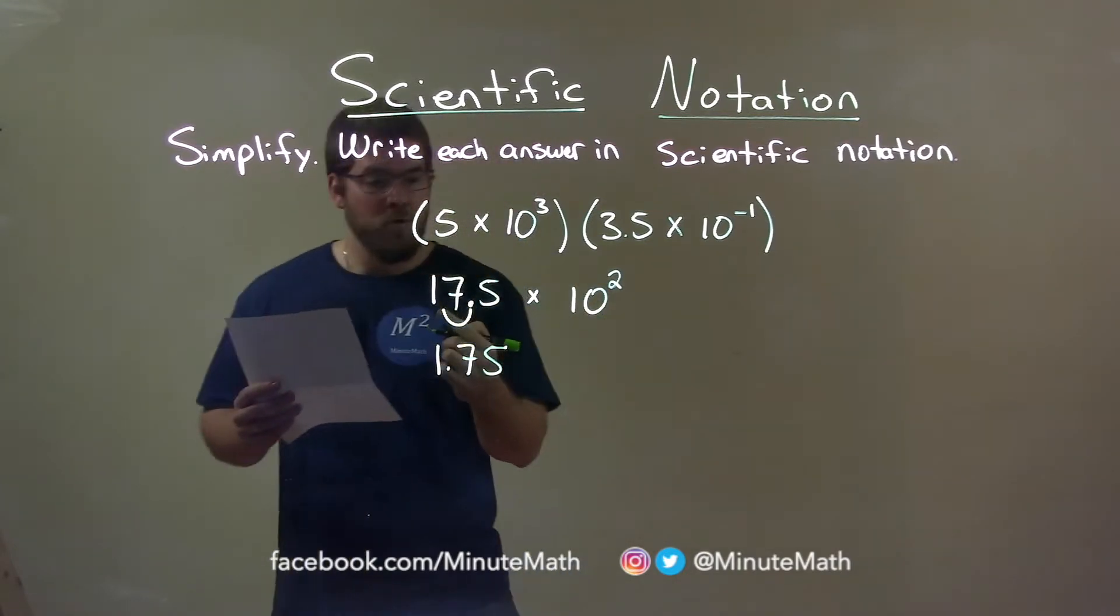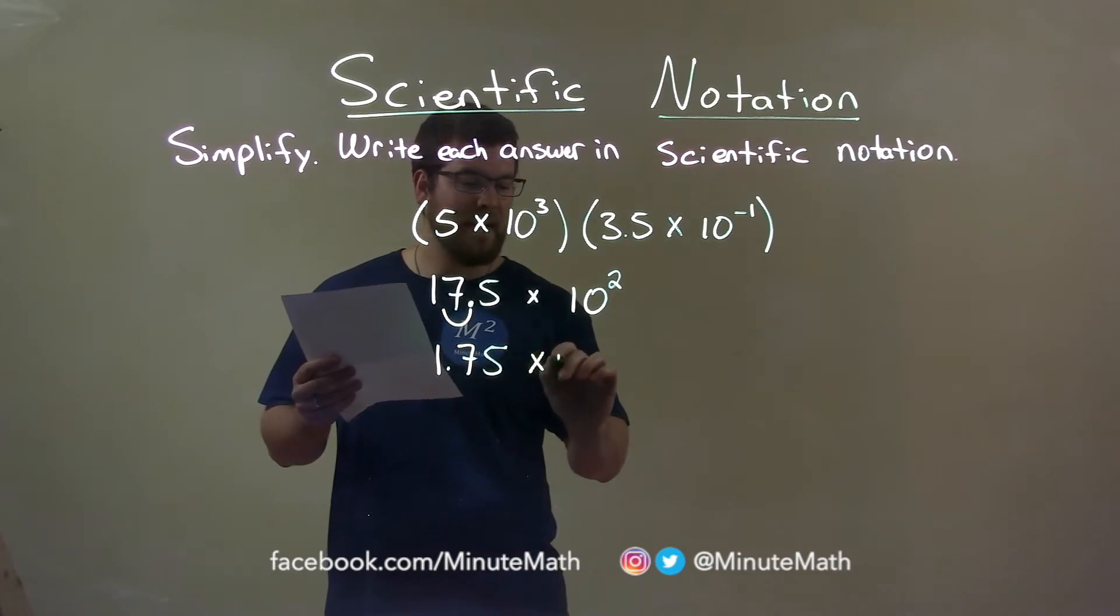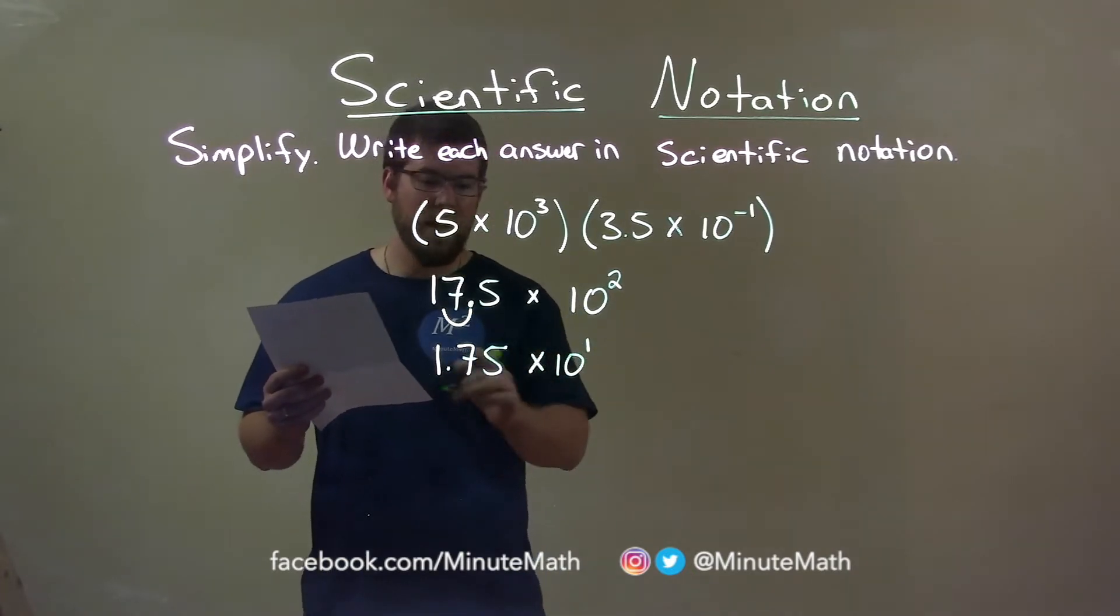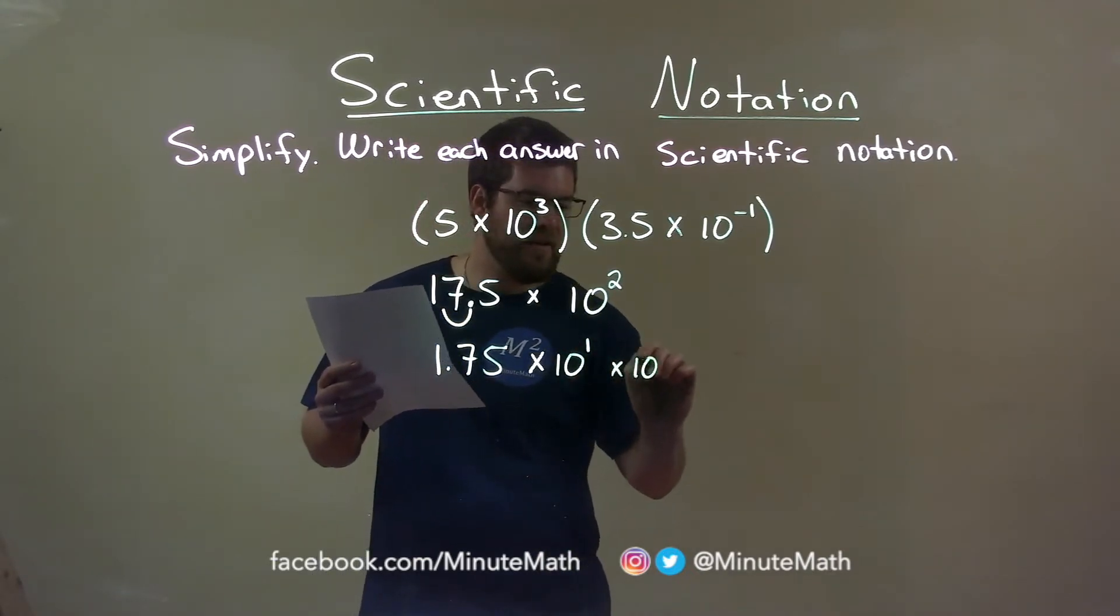To counteract that decimal movement of one spot to the left, we need to multiply this by 10 to the first power, and that will counteract that decimal movement. Bring down 10 to the second power.